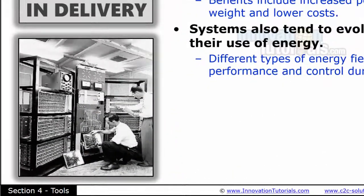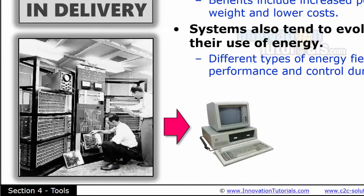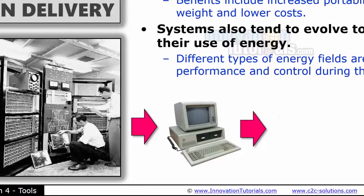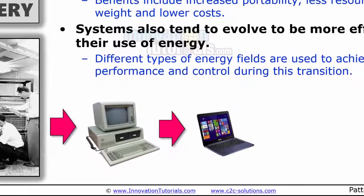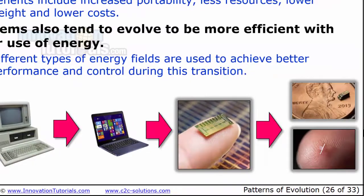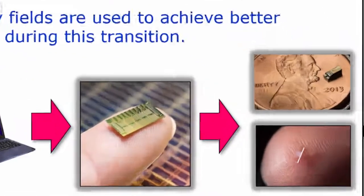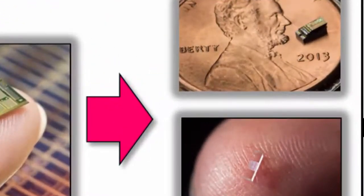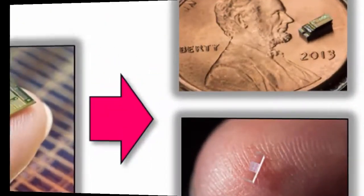If you think about how computers have evolved over time, when desktop computers were created in the 80s, they were much smaller versions — not nearly as powerful as the mainframes, but still quite adequate. And then they've gotten smaller and smaller and smaller. This is the latest one I've seen here on the penny, which is a fully operating computer.